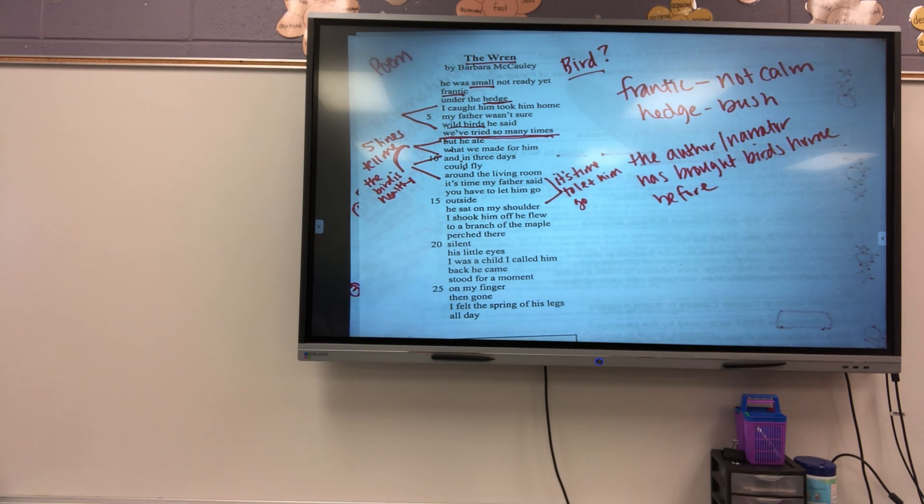So here it's saying that it's time, the father's basically saying it's time to let him go. He sat on my shoulder. I shook him off. He flew to a branch of the maple perch there. Silent his little eyes. I was a child. I called him. Back he came. Stood for a moment on my finger. Then gone. I felt the spring of his legs all day.